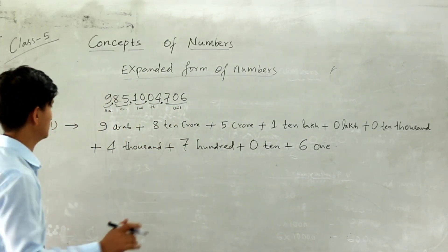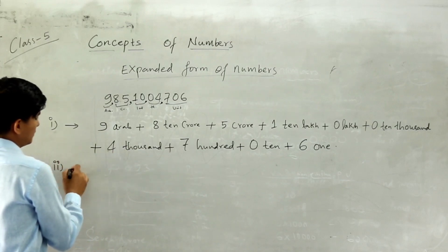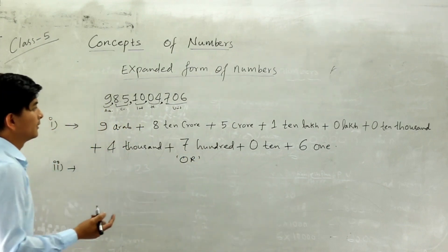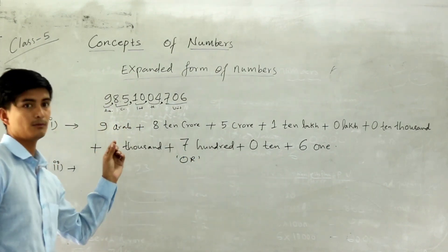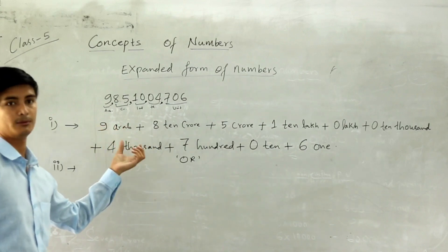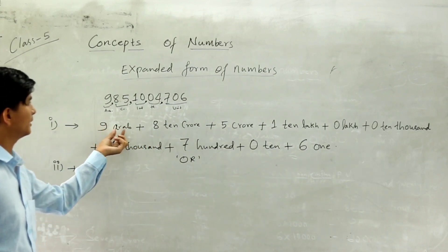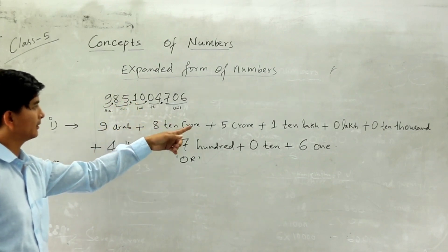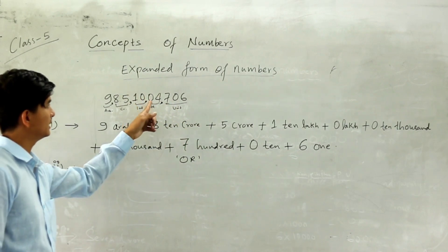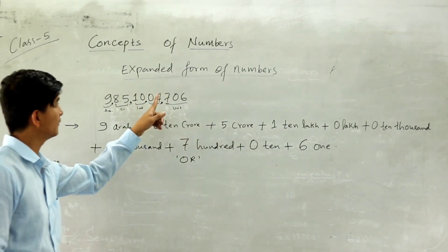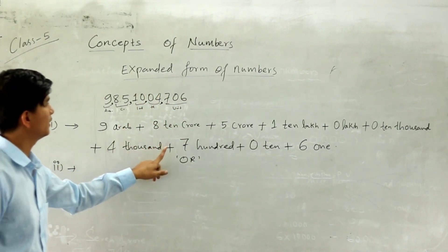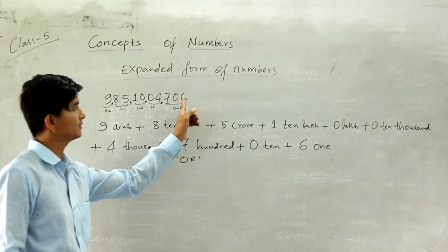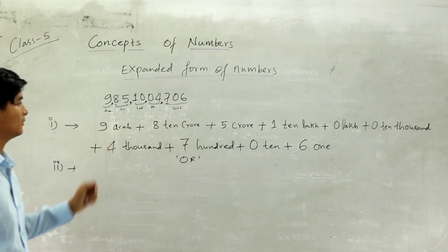So this is the first method. Or you can write it directly: 9 crores + 8 ten crores + 5 crores + 1 ten lakh + 0 lakh + 0 ten thousand + 4 thousand + 7 hundred + 0 tens + 6 ones. Like this. Now the next method.